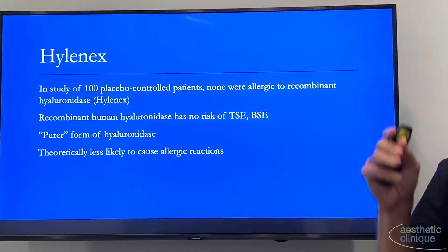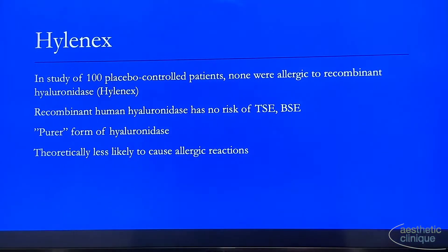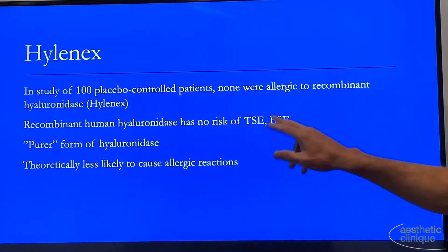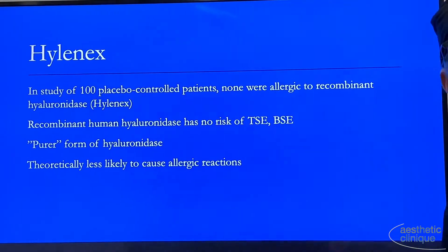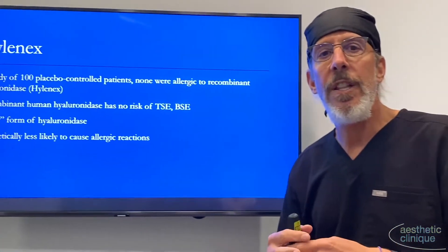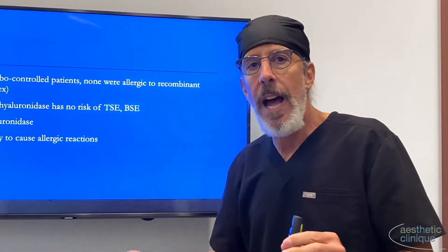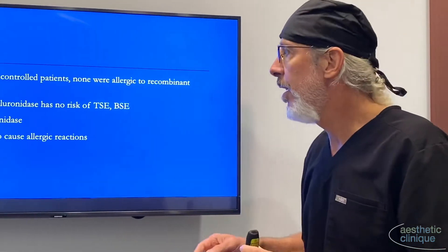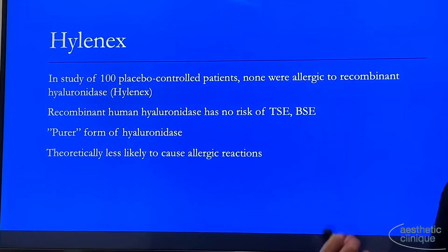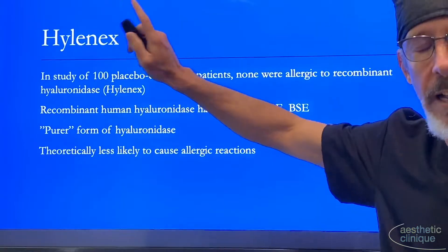Hyalinex is a human recombinant form of hyaluronidase. In a hundred placebo-controlled patients, some injected with saline and some with Hyalinex, there were no allergic reactions to Hyalinex. There's also no risk of spongiform encephalitis, which is a theoretical risk with ovine or bovine extraction. Hyalinex is a pure form with theoretically zero or very low risk of allergic reactions, and this is the form I use.